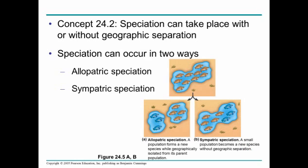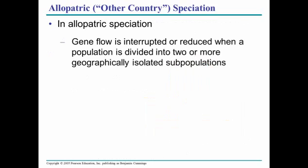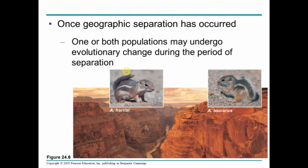Allopatric speciation, sympatric speciation. In allopatric speciation, gene flow is interrupted or reduced, and populations are divided into two or more groups, usually geographically. This is an example of two different squirrels that live on opposite sides of the Grand Canyon — they are geographically isolated, and that separation will cause them to become different species.